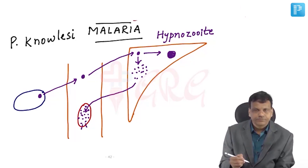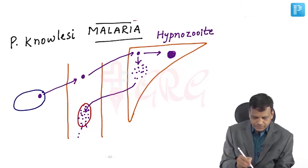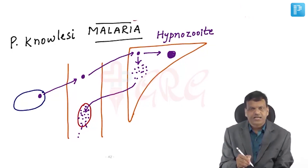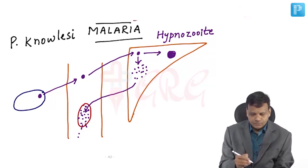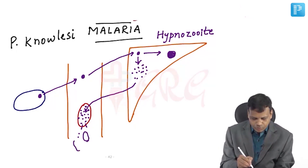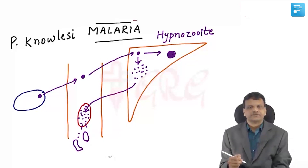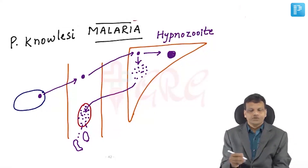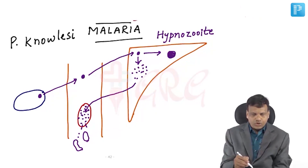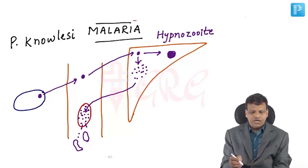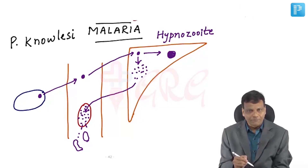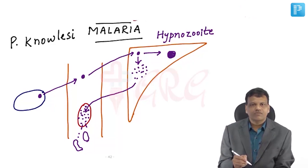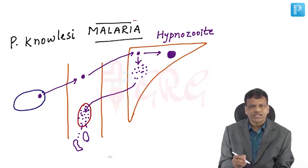When the RBC ruptures, the parasite is liberated. This parasite can either enter other RBCs — continuing the same cycle — or it is converted into male and female gametes. These gametes cannot fuse in human blood; they can fuse only inside the mosquito.